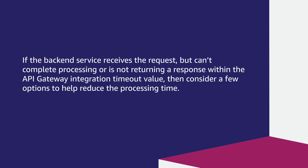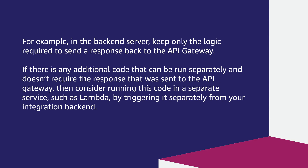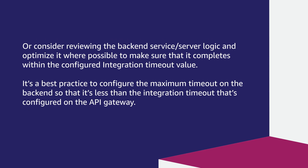If the backend service receives the request but can't complete processing or isn't returning a response within the API Gateway integration timeout value, you can consider these options to help reduce the processing time. For example, in the backend server, keep only the logic required to send a response back to the API Gateway. If there is any additional code that can run separately or isn't required for the response sent to the API Gateway, consider running this code in a separate service such as Lambda by triggering it separately from your integration backend. Also consider reviewing and optimizing the backend service logic to ensure it completes within the configured integration timeout value. It's a best practice to configure the maximum timeout on the backend so that it's less than the integration timeout configured on the API Gateway.